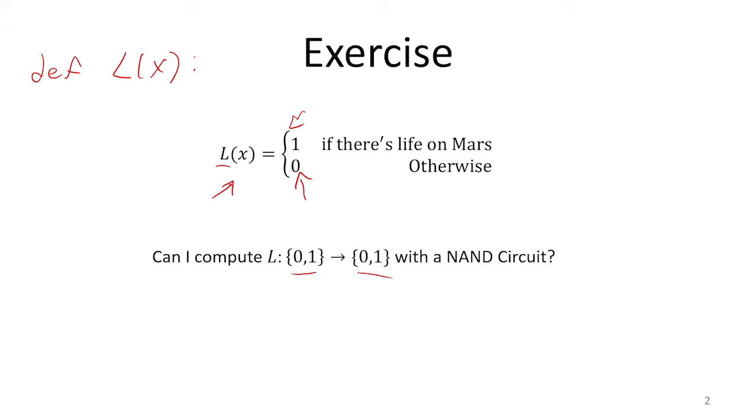But it's going to be one of those two. There are only two options for what this function is. It's either going to say for any x that you give as input, it's going to return one. Or it's going to say for any x that you give it as input, it's going to return zero.